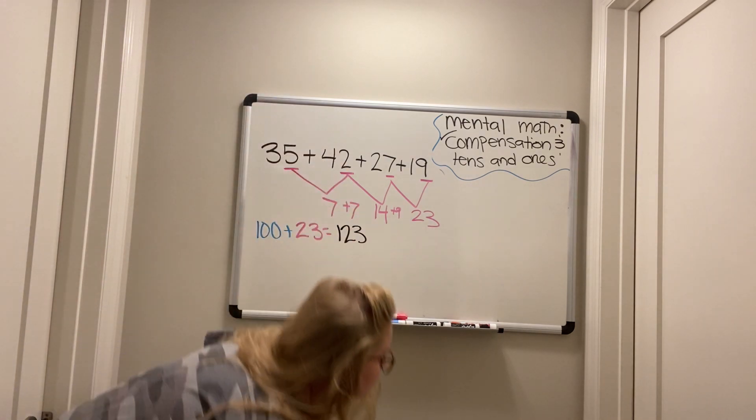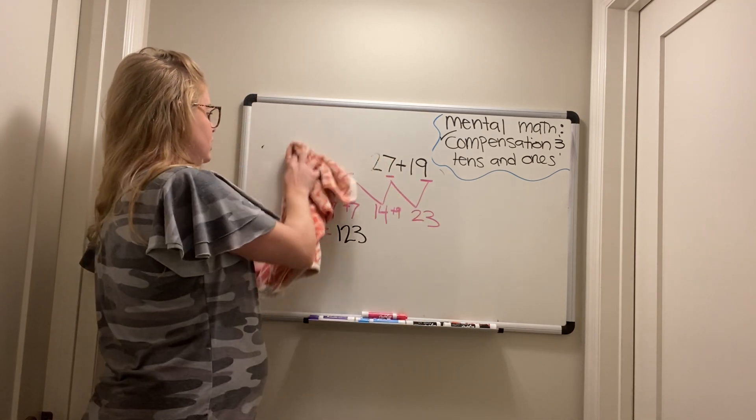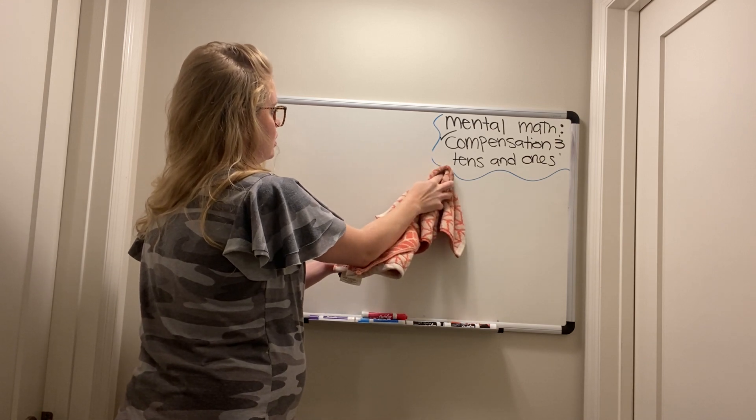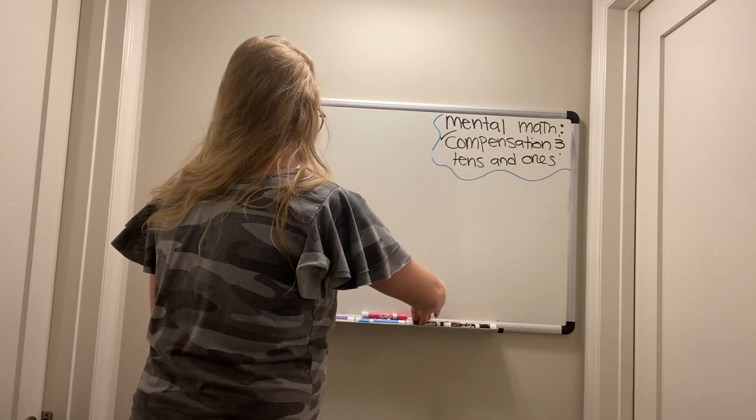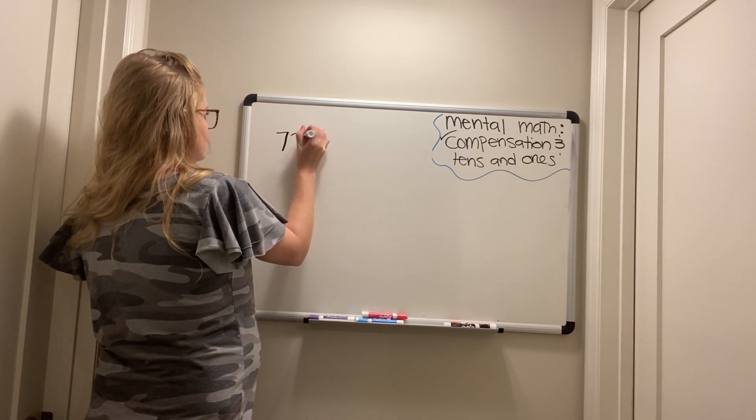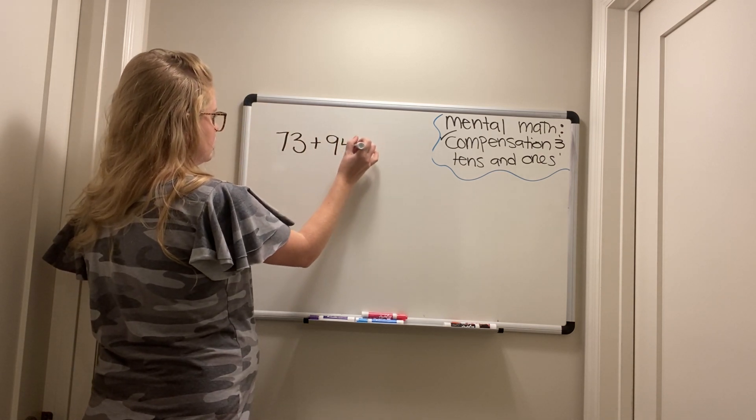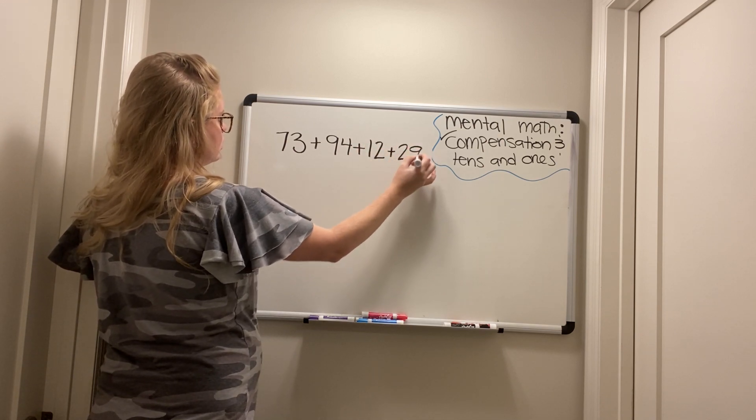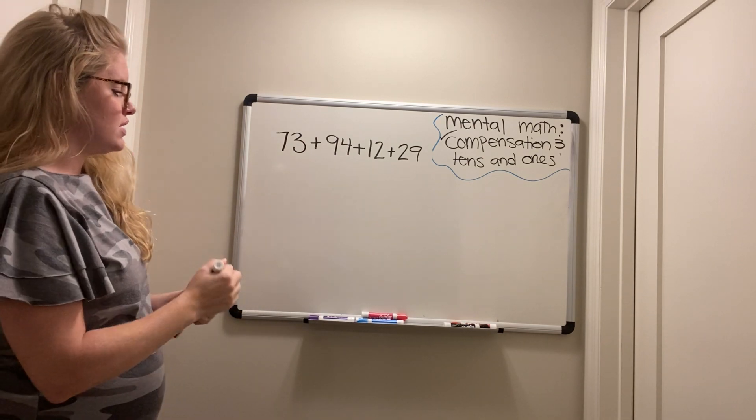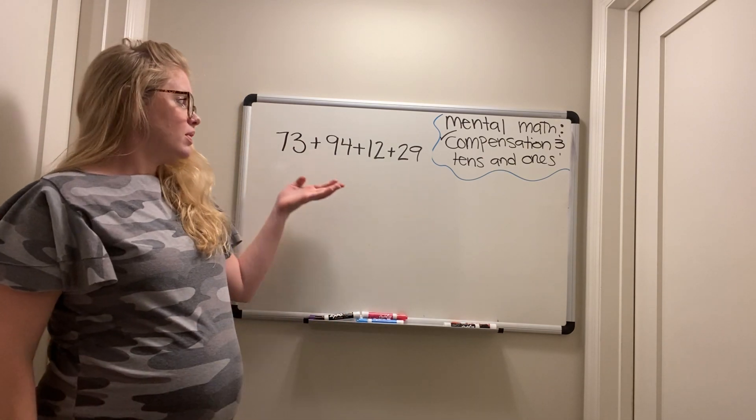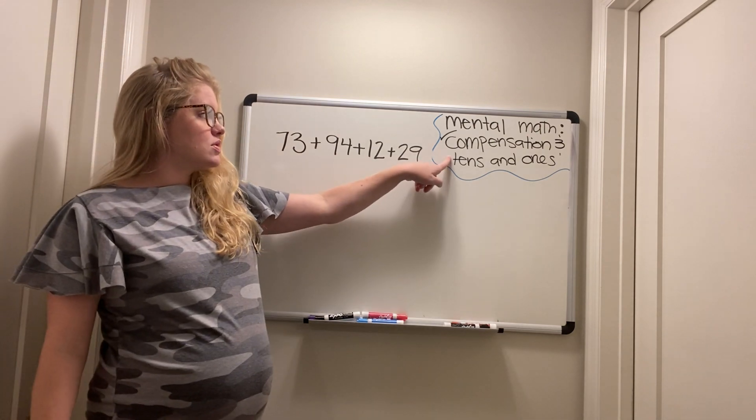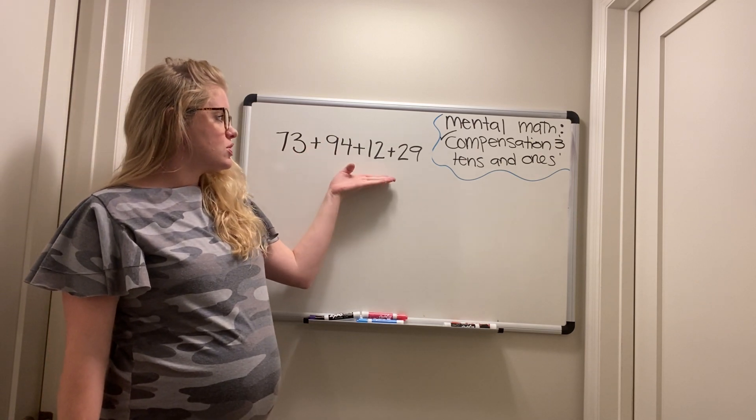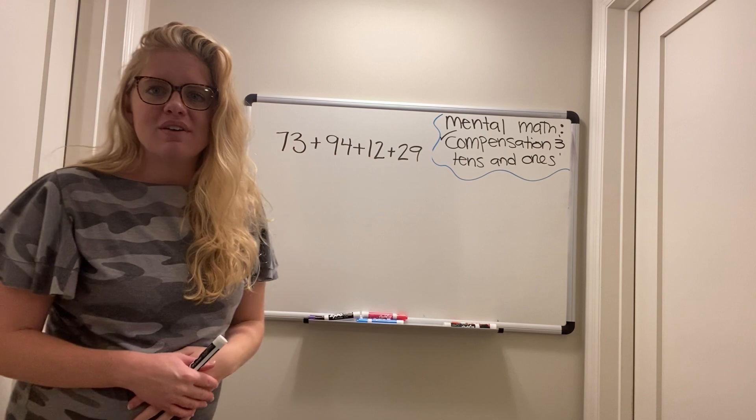Okay. Are you ready to try it on your own? I think you are. I think you are ready to try it on your own. Okay. Here we go. All right, scholars. Pause your device and do this problem using the tens and ones strategy. 73 plus 94 plus 12 plus 29. Go ahead, friends.